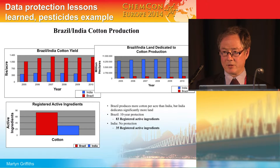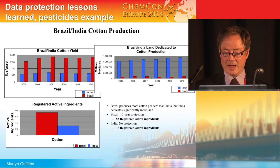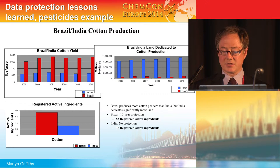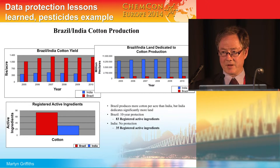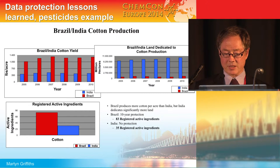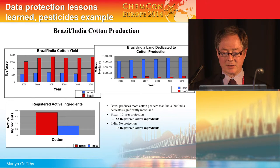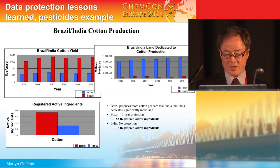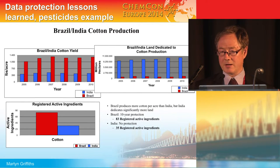There are also more active ingredients, so the farmer has more choice of which products to use. As a result, on the right-hand side you can see that the land needed to grow cotton is much higher in India, because there is a lack of innovation and a lack of opportunity to control pests. This is a clear example showing that when innovation is rewarded through data protection — by submitting regulatory information for pesticides — it has a significant benefit for yield and a reduction in land use.